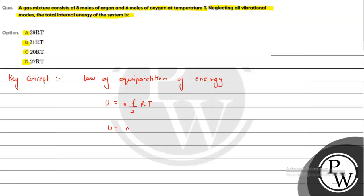Now applying for the case of mixture of gas, the total internal energy of the system can be written as U1 plus U2 and so on. We will add all the internal energies.